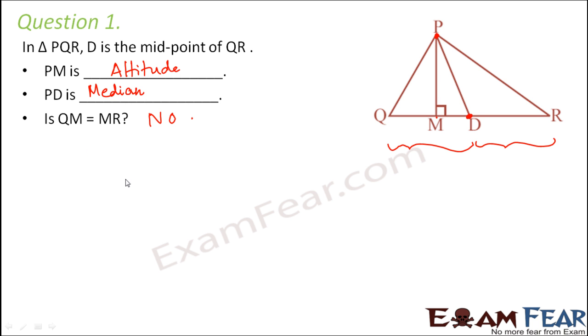Even if we try to prove this mathematically, we can prove it like this. Since we know that PD is the median, that means D is the midpoint of QR. Therefore QD is equal to DR. So QD can be written as QM plus MD, which is equal to DR.